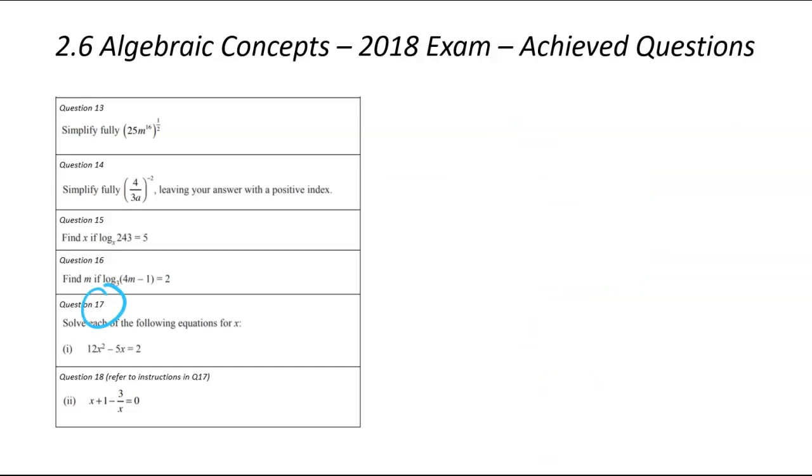Okay, we're up to question 17. And it looks like we've got a quadratic equation because of that x squared. Straight away, I'm thinking I can either factorize, I can solve, I can complete the square, I can use my calculator, I can use my graphics calculator. But let's factorize here. So question 17, 12x squared minus 5x is equal to 2.